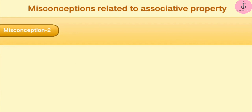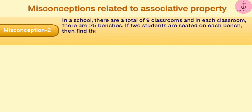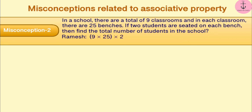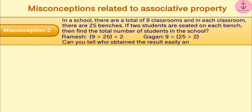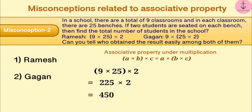Misconception 2: In a school, there are 9 classrooms and in each classroom there are 25 benches. If 2 students are seated on each bench, find the total number of students in the school. Ramesh solved this as (9 × 25) × 2 and Gagan solved this as 9 × (25 × 2). Associative property is sometimes considered meaningless and neglected. Solving (9 × 25) × 2 is difficult because first we multiply 9 × 25 to get 225, then multiply 225 × 2 — both steps are hard.